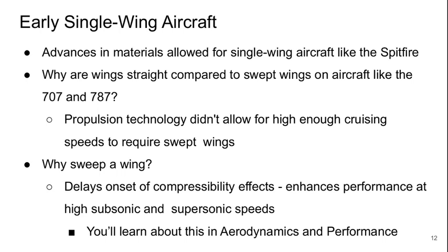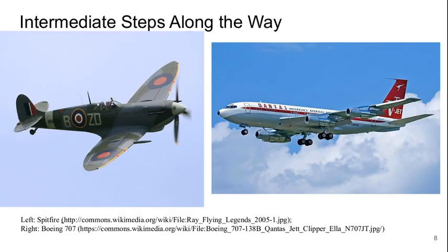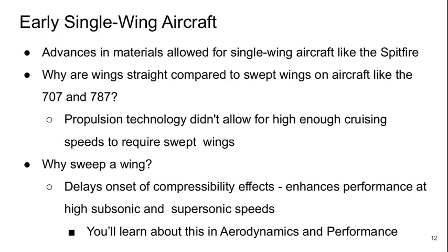On the Spitfire, the wings are straight — they go roughly perpendicular to the body of the aircraft. This is in contrast to the swept wings on aircraft like the 707 and the 787. The reason for this is that the propulsion technology of the Spitfire's era didn't allow for high enough cruising speeds to need swept-back wings. Sweeping a wing basically delays the onset of compressible flow effects, which enhances the performance of the wing at high subsonic and low supersonic speeds.